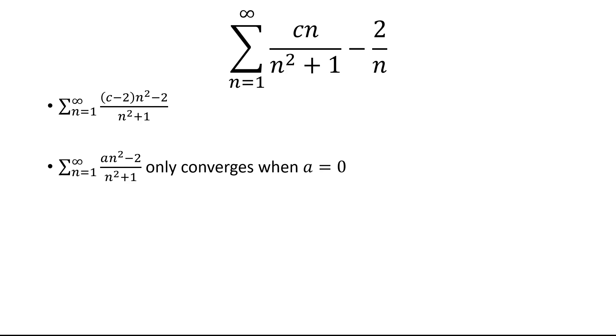But notice the question I was asking about c, not a. a we said was c minus 2. So if a is 0, c minus 2 has to be 0. And so that means c has to equal 2. And that's when the sum converges.